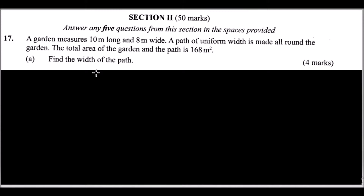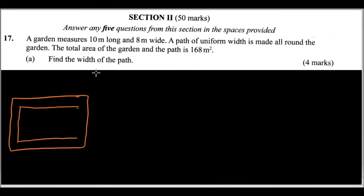Let's say this is the garden and the path, with the garden inside. We are told the garden is 10 meters long and 8 meters wide. The path is made all around it. We can call the width of the path x. We are told the total area equals 168 square meters.